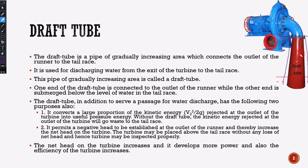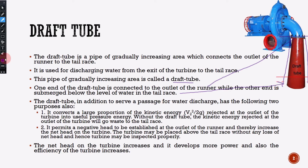The draft tube is a pipe of gradually increasing area which connects the outlet of the runner to the tailrace. It is used for discharging water from the exit of the turbine to the tailrace. One end of the draft tube is connected to the outlet of the runner, while the other end is submerged below the level of water in the tailrace.